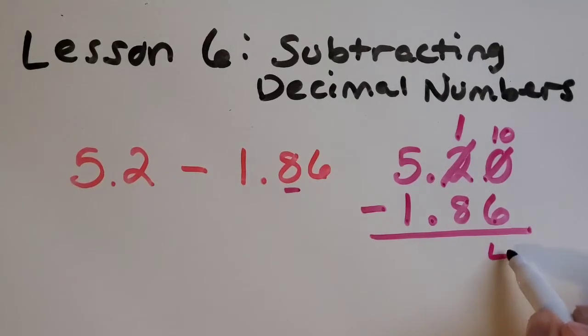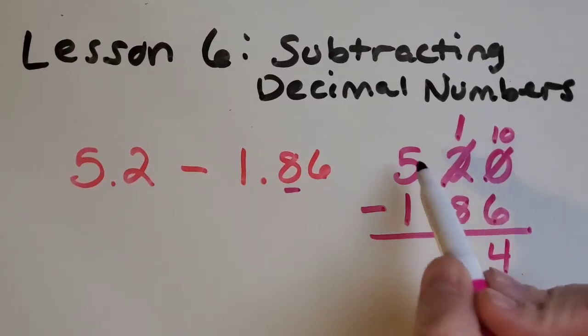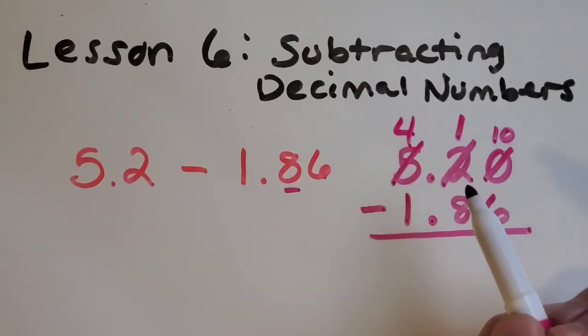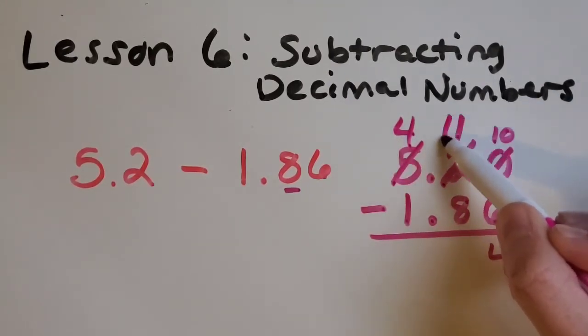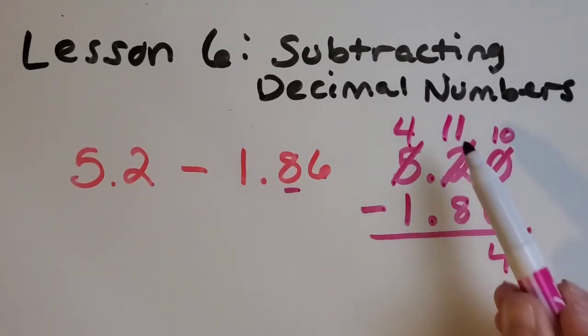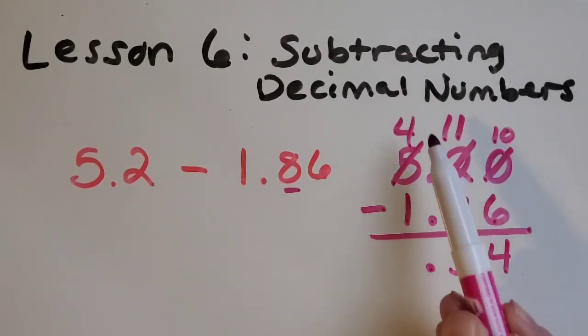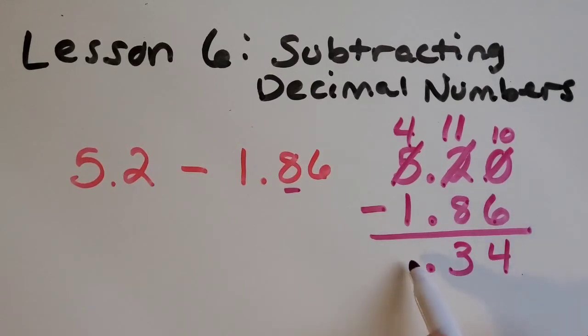Then I see I've got one tenth minus eight tenths. Oh, I need to regroup again. Let me break up one whole into ten more tenths and now I've got eleven tenths. Eleven minus eight is three. I'm going to bring down my decimal point and then four wholes minus one is three wholes. So my answer is 3.34.